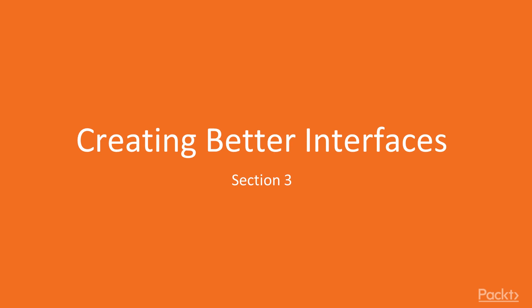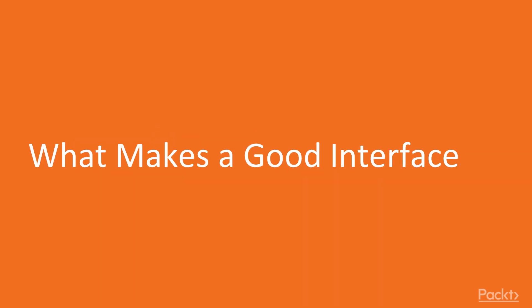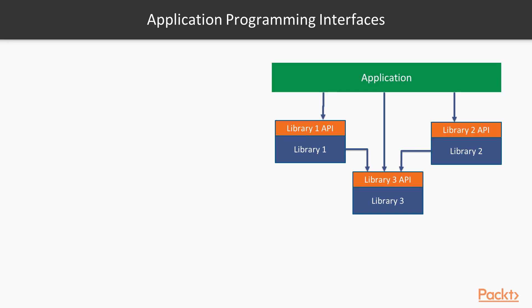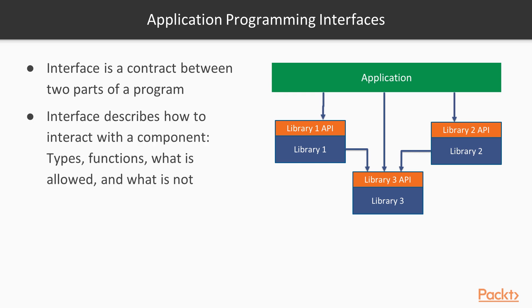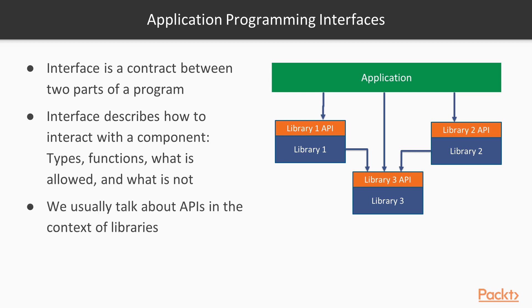Creating better interfaces — what makes a good interface? An application programming interface, or API, is essentially a contract between two parts of a program. An interface describes how to interact with a component or a package: what are the available types, what functions can you call, which conditions are allowed and which are not. When talking about APIs, most of the time what we mean is third-party libraries that our application reuses.